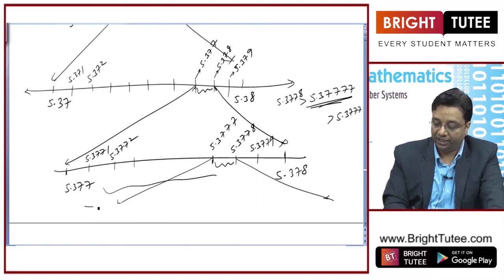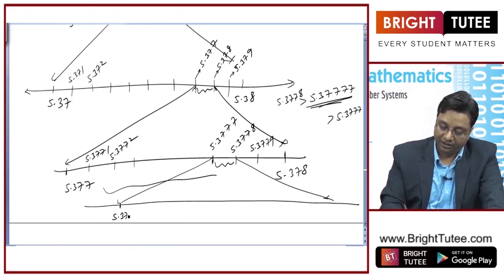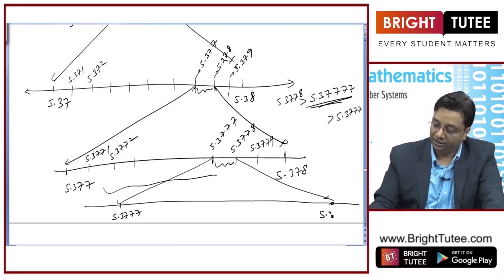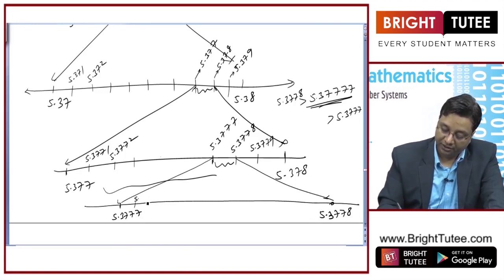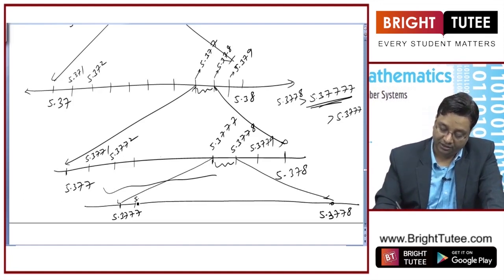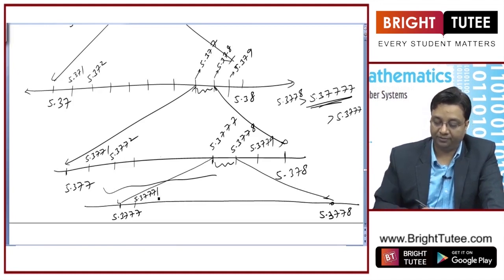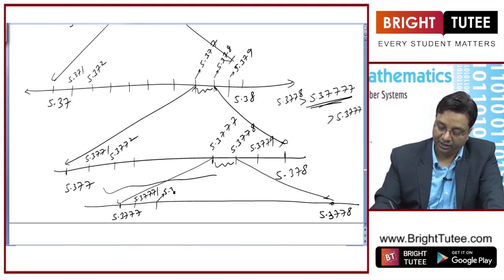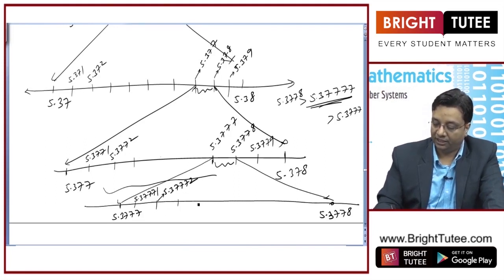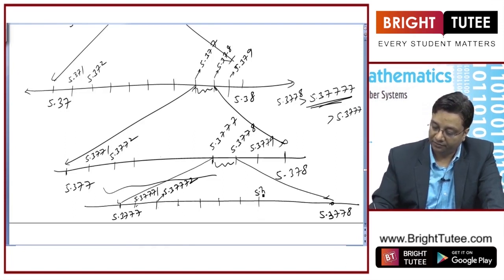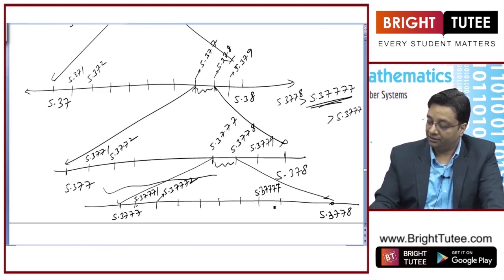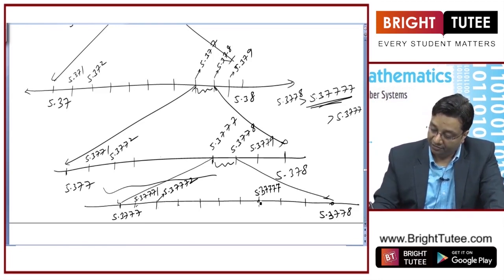Now this shows 5.3777 on one end and 5.3778 on the other. Dividing into 10 equal parts gives: 5.37771, 5.37772, and so on. This number 5.37777 will land on the seventh mark here — 5.37777. After that comes 5.37778, 5.37779, and then 5.3778. So I have located this number on the number line.